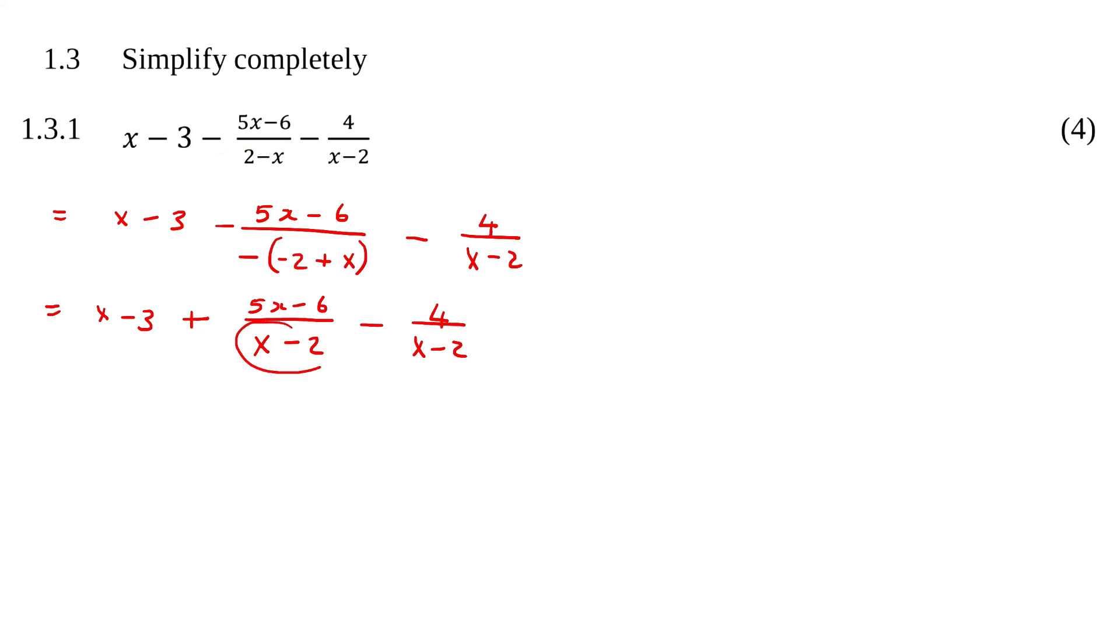The reason we did that is so that these two are now the same and so now we can see that we have a lowest common denominator which would have to be x minus 2. So that means that this x is going to have to be multiplied by x minus 2 and this one is also going to have to be multiplied by x minus 2. So that all of them can be written over x minus 2.